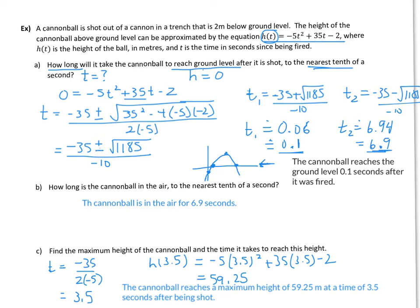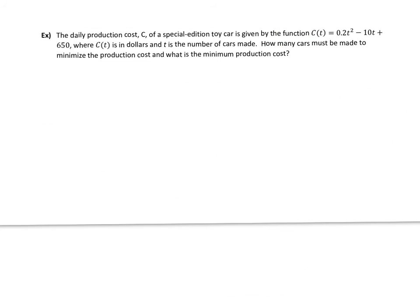So hopefully that makes sense for that one. Alright, our last example here is the daily production cost. So a cost revenue profit kind of question. The cost is given by this equation, which you'll notice extended onto here. So don't forget that 650 is part of it. Cost is in dollars and t is the number of cars that's being made. How many cars must be made to minimize the production cost?